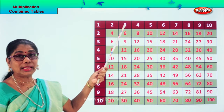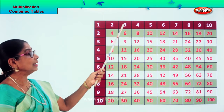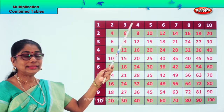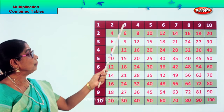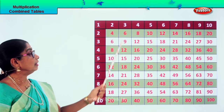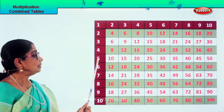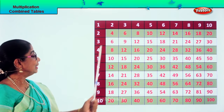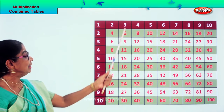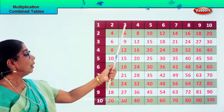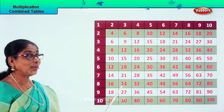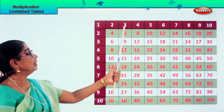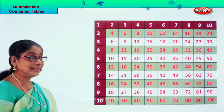Now this way — three times table: three ones are three, three twos are six, three threes are nine, three fours are twelve, three fives are fifteen, three sixes are eighteen, three sevens are twenty-one, three eights are twenty-four, three nines are twenty-seven, three tens are thirty.